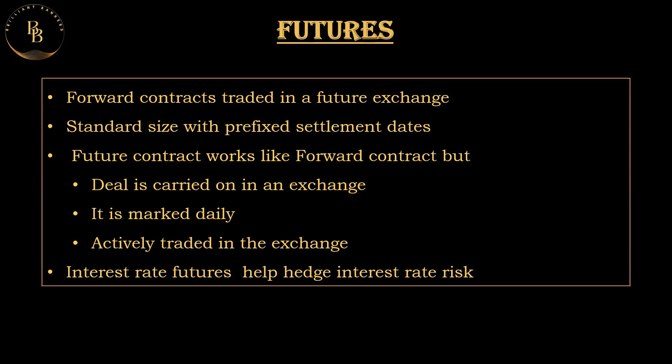How does futures trading work? Traders can go long — expecting a price to rise — or go short — expecting a price to fall. Contracts have a specified expiration date leading to settlement, and traders deposit a margin — a percentage of the contract value — which enables control of larger positions. Examples of futures traded on exchanges include commodity futures: contracts for commodities like gold, oil, wheat, and soybeans.